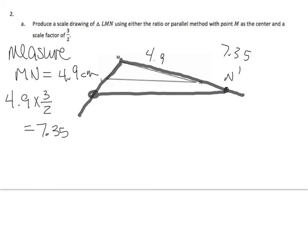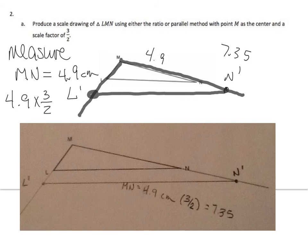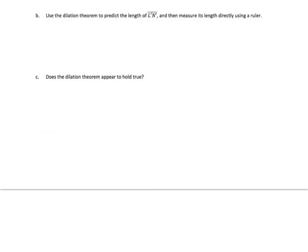Measure MN. Let's see, when I did that I got 4.9 centimeters. And then I multiplied that by three halves and I got 7.35. So MN was 4.9 and then MN prime was 7.35. I used the parallel method because I really like the parallel method. Way easier to use than the ratio method. Drew a line over here and I got L prime. It looks awesome, doesn't it? I bet yours will look the same.